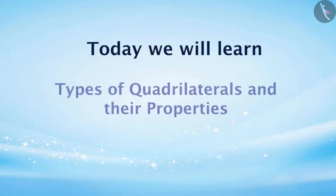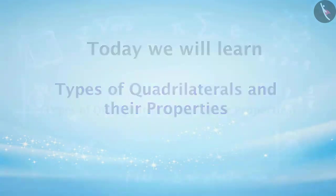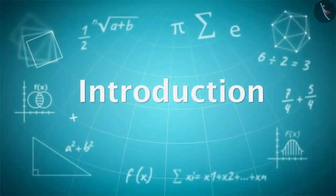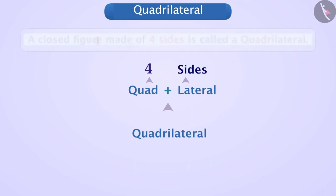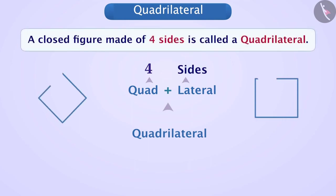Today we will learn about types of quadrilaterals and their properties. First of all, let us understand the meaning of the word quadrilateral. The word quadrilateral is made of quad plus lateral. Quad means four and lateral means sides. A figure made of four sides is called a quadrilateral.